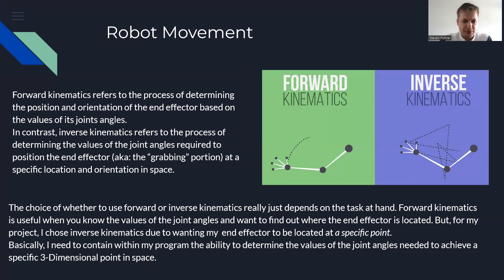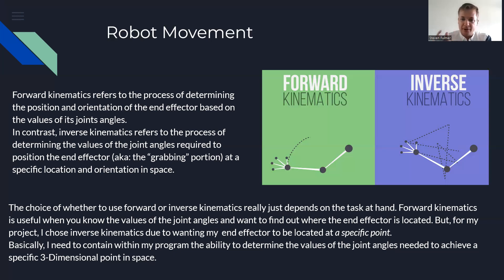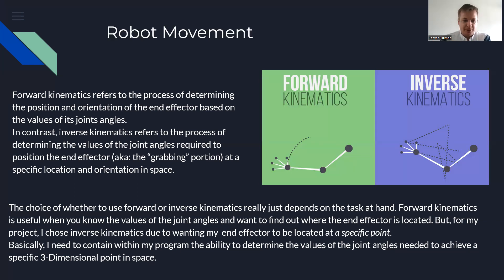The choice between forward and inverse kinematics really depends on the task at hand. Forward kinematics is useful when you want to know the end effector location given joint angles. For my project, I've chosen inverse kinematics because I need my end effector to be located at a very specific point in space — my program must determine the values of all joint angles needed to achieve a specific three-dimensional point in space.